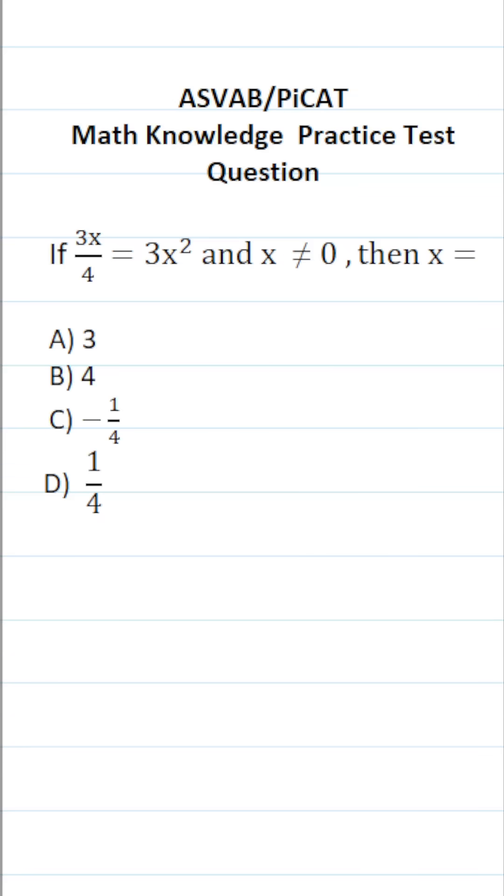This math knowledge practice test question for the ASVAB and PiCAT says, if 3x over 4 equals 3x squared and x does not equal 0, then x equals.